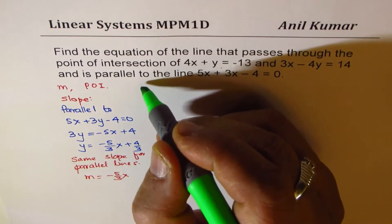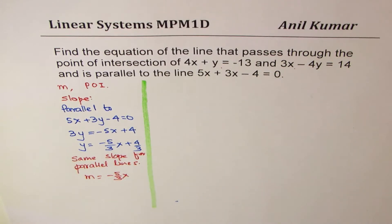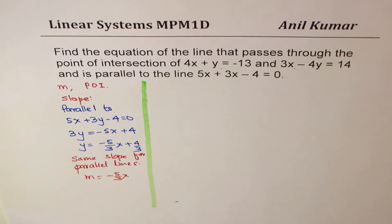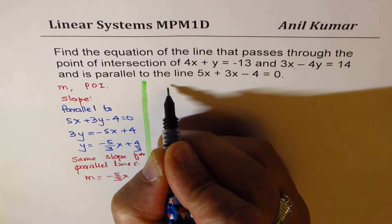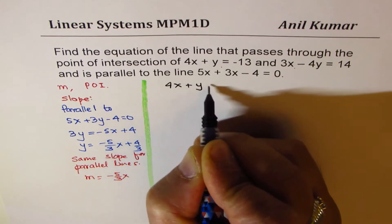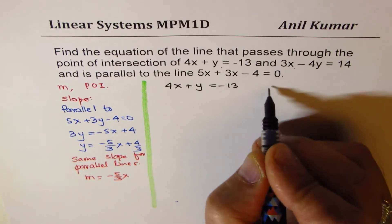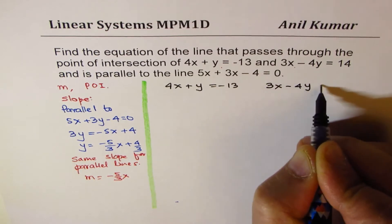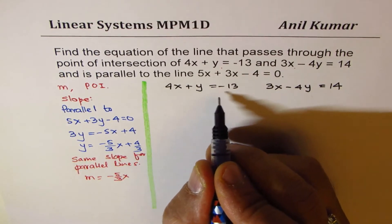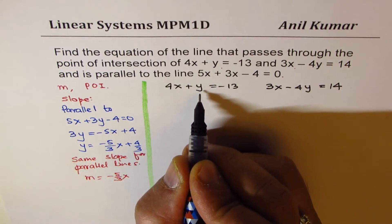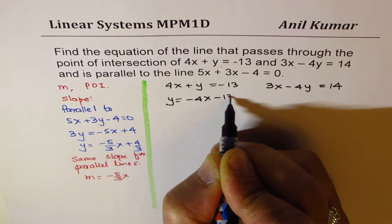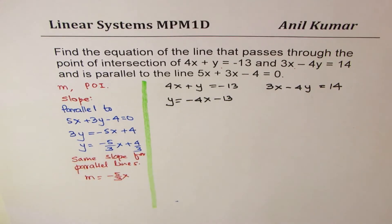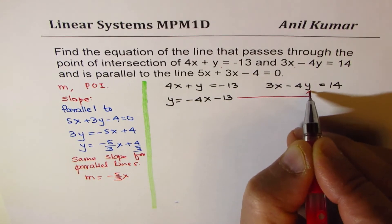We have done the first part — finding the slope. Now we have to find the point of intersection. Let's solve these two equations: the first one is 4x + y = -13 and the second one is 3x - y = 14. To find the point of intersection, let's substitute the value of y from the first equation into the other. Rearranging gives y = -4x - 13.